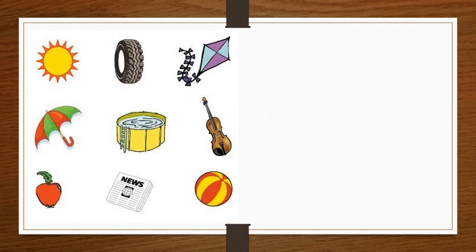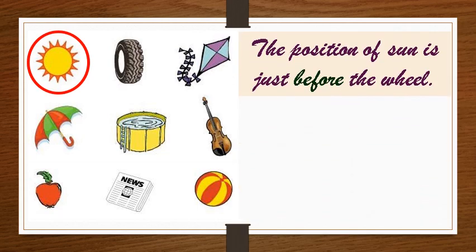In the first set of figures, let us ring the object that comes just before the wheel. The position of sun is just before the wheel.